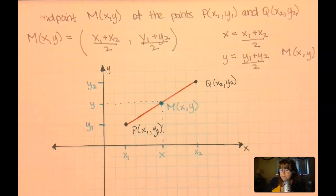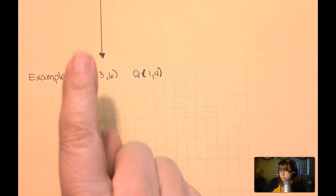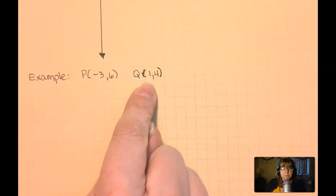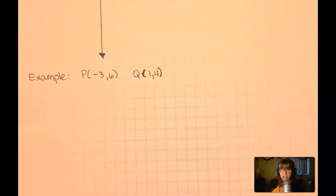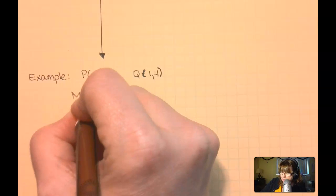Let's try an example really quickly. So here we have two points, P and Q. P is negative 3, 6. Q is 1, 4. And I want to find the midpoint to this. I'm not going to sketch it. You can sketch it if you want. But I'm going to go ahead and say my midpoint at x, y.